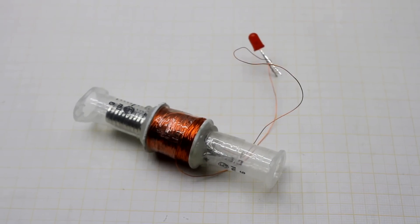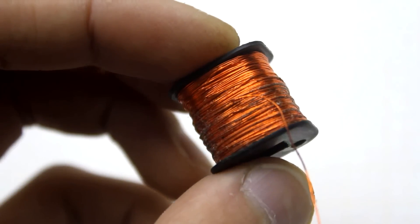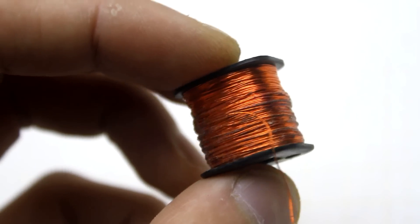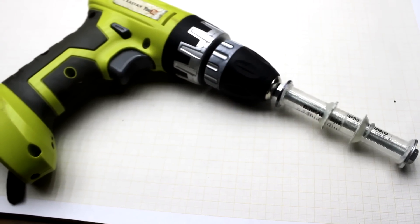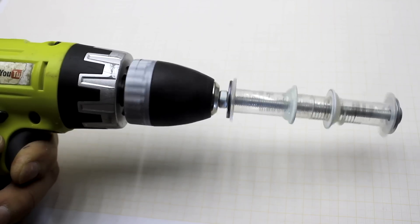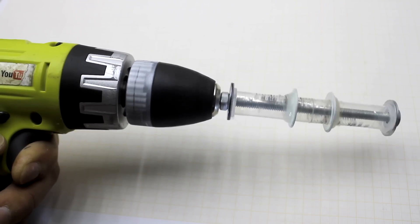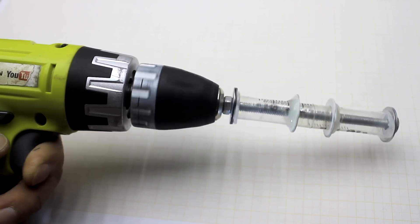The winding contains about 1200 turns. To say honestly, I did not count the number of turns, but knowing the time of the winding and the number of the revolutions of the screwed driver per minute, I can approximately calculate the number of turns.